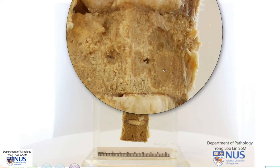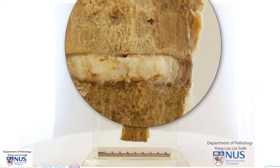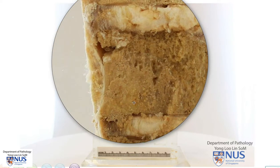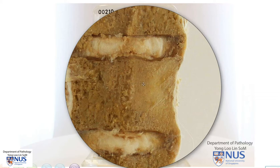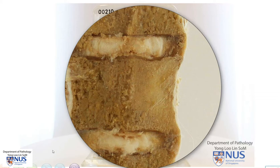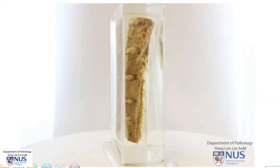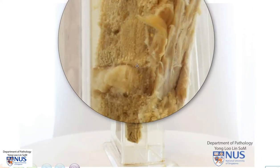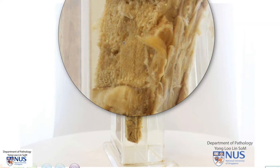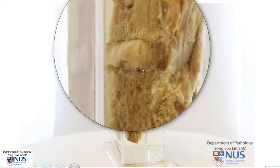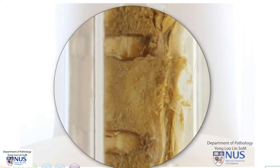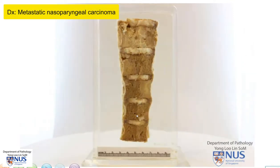This is an example of metastatic carcinoma involving the vertebral bodies. Here are the other abnormal areas. Looking at the side view, we can also appreciate the abnormal appearance both in terms of the slight colour difference as well as the texture difference. This is metastatic nasopharyngeal carcinoma in the vertebral bodies.